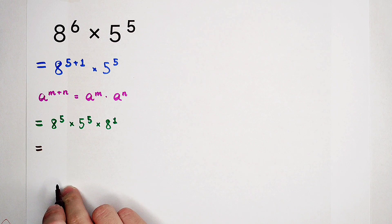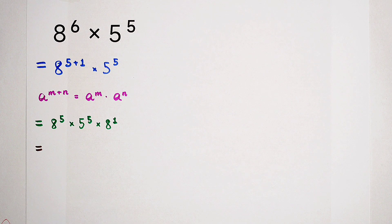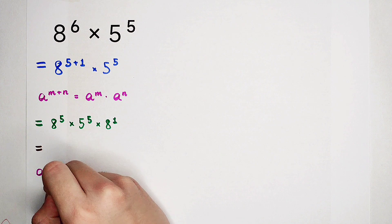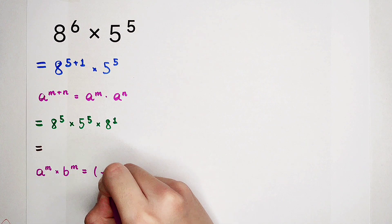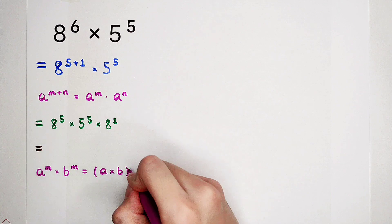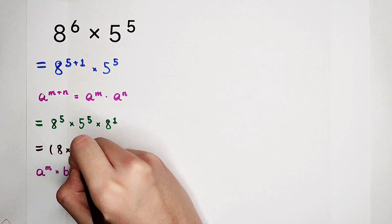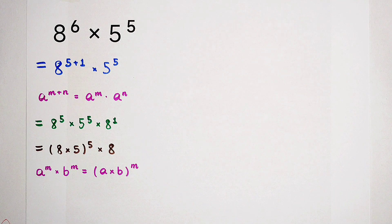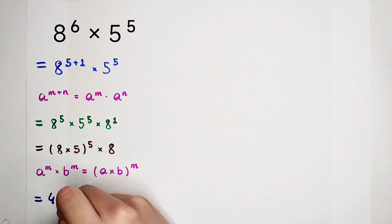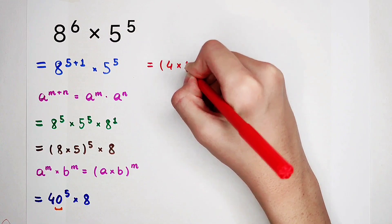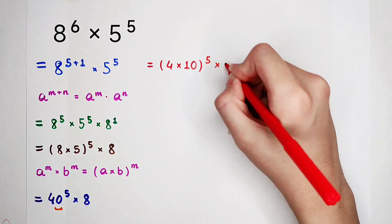So next step, we are going to use this formula: a to the power of m times b to the power of m is equal to the base a times b, all raised to the power of m. So now this is 8 times 5, all to the power of 5, and then times 8. That gives us 40 to the power of 5, times 8.